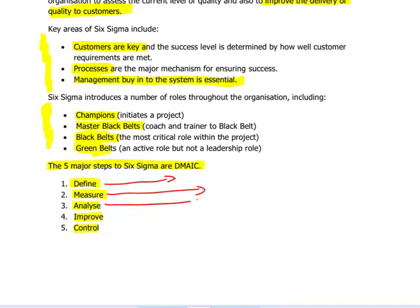The next step is Analyze. With the analyze stage, we need to analyze all the data we've collected, identify the cause and effect relationships, and attempt to ensure that all of the factors have been considered — so we're analyzing the data we've measured. Next, when it comes to Improve: once we've identified the objectives, measured and analyzed, we need to start improving things, coming up with ideas or improved processes. We need to run pilot programs to establish how feasible the improvements are going to be.